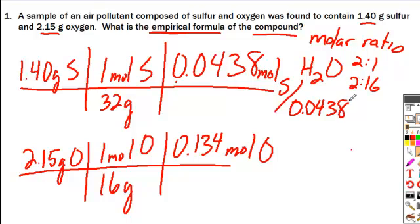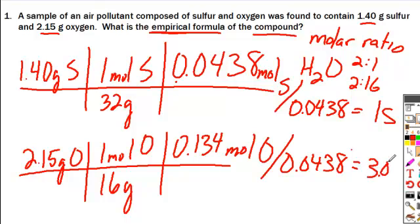So we divide it by that, and that means we have one sulfur, one mole of sulfur, and we do 0.134 divided by 0.0438. And that's going to give us a value of 3.06 moles of oxygen.